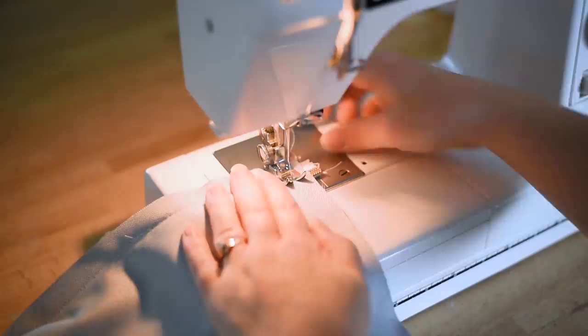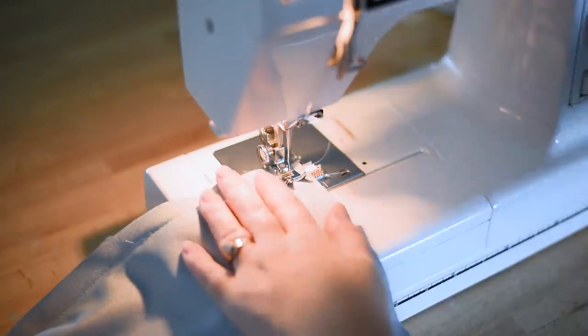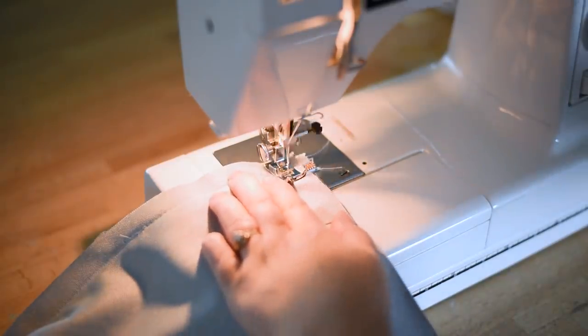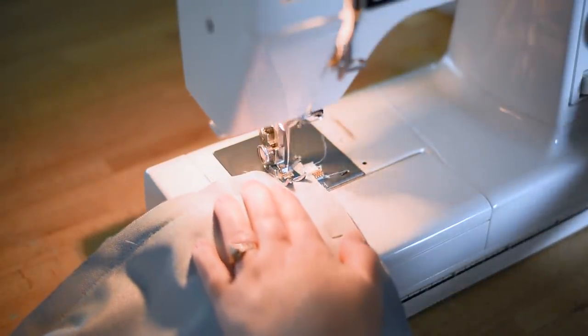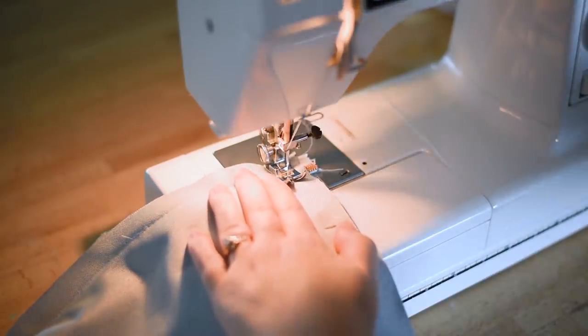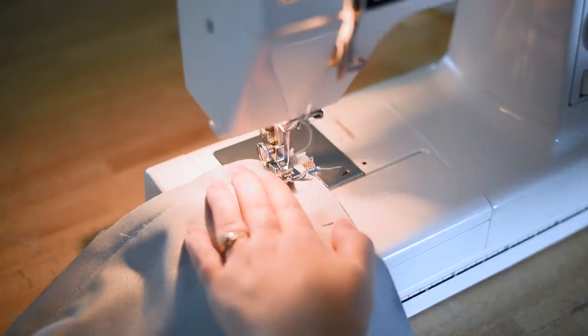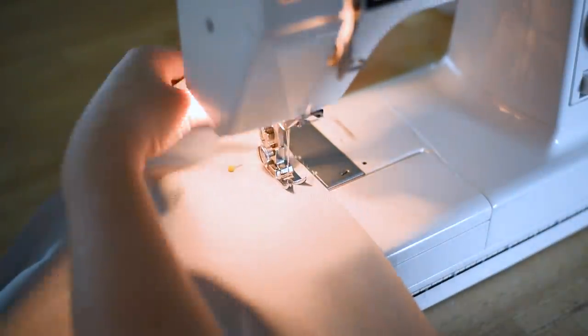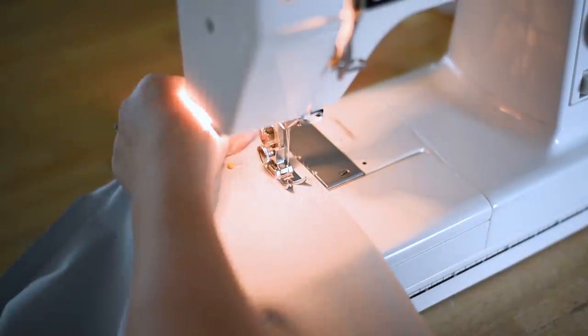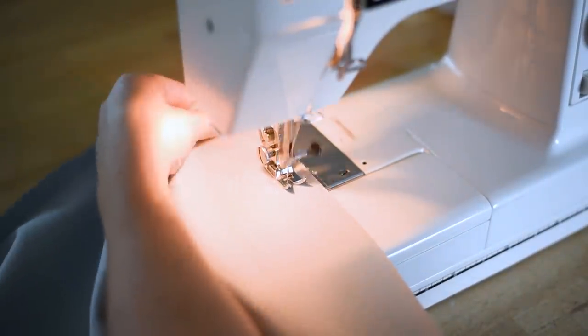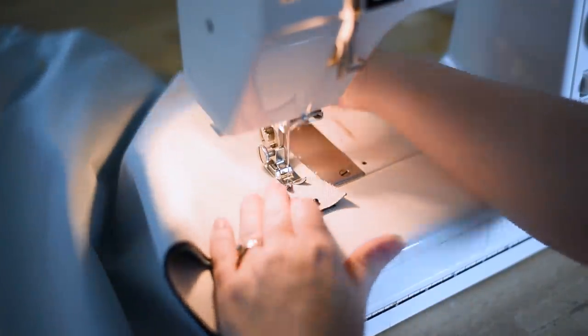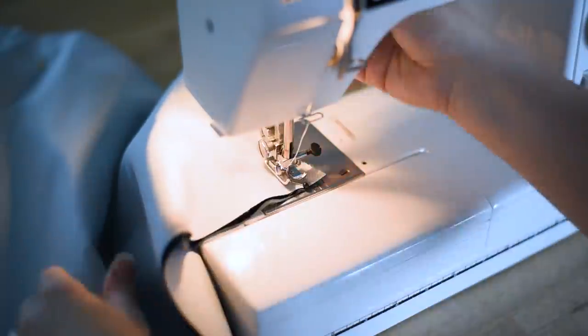And then you're just going to sew around the perimeter of the pillow. So start on the top of the pillow where the zipper is. You're going to have to potentially use your hand and hand turn the crank on your sewing machine to get past the zipper. You want to be really careful here because if you go right to full speed ahead on the zipper part, you might break your needle. So you potentially might have to hand crank that part. And then the rest is pretty straightforward. Just sew a half inch seam allowance and use a medium stitch length and sew all the way around the perimeter of your pillow.